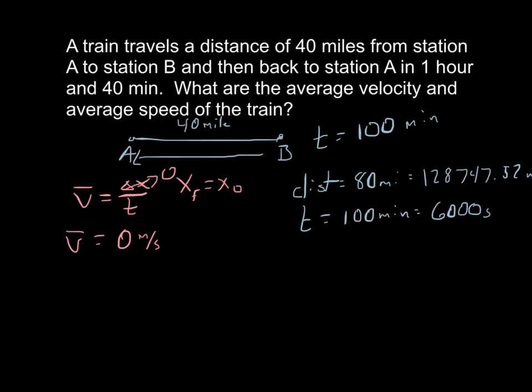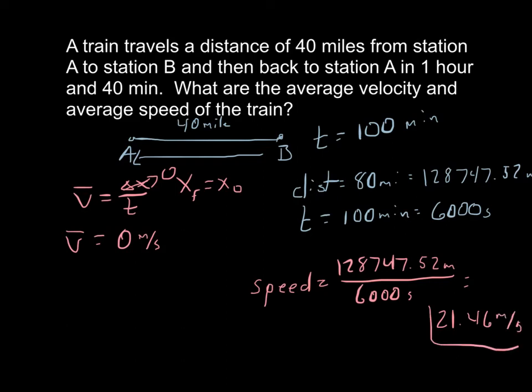So I can calculate my average speed. My total distance, 128,747.52 meters, divided by my total time, 6000 seconds, gives me an average speed of 21.46 meters per second. And that would be our average speed for that trip.